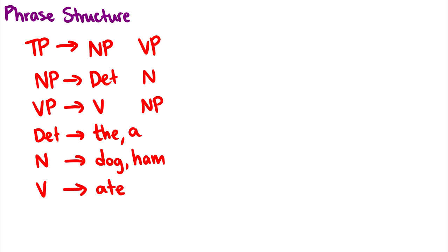So let's cover phrase structure rules. Essentially, these are rules of how we construct sentences. We call every sentence a tense phrase or a TP. So we can start a sentence with a TP and then follow the rules. For instance, if we have a TP, we can break it into an NP and a VP in that order, meaning our tree can look something like a TP branching into an NP and a VP.